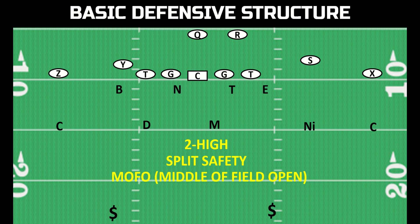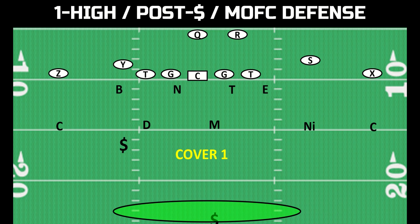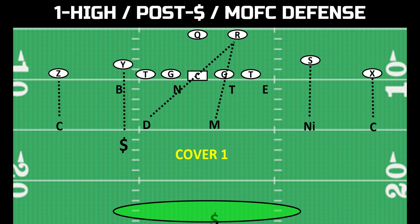Let's focus on one high right now. We're saying there's a safety rotation after the snap — sometimes it's before the snap, but good defenses disguise it and don't show it until after. When this happens, there are two different types of coverages. The first is called cover one. Cover one is when the post safety is playing the post and everybody else is playing man defense. There are multiple different ways to play cover one, which you can dive deep into in this other video.